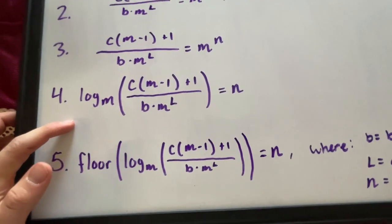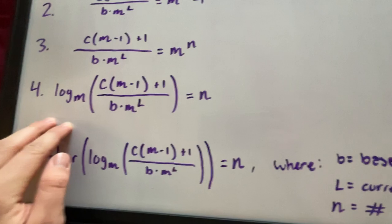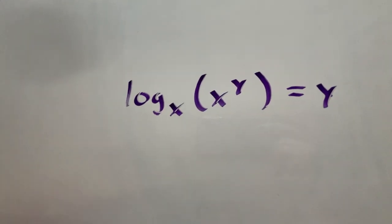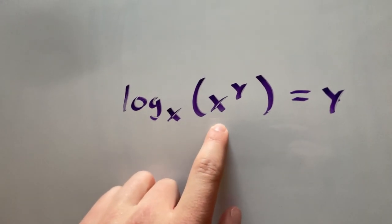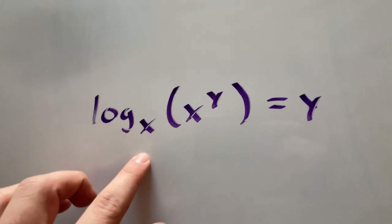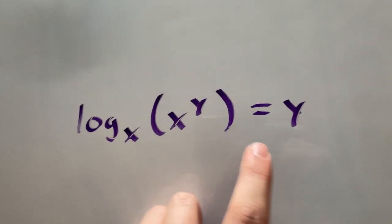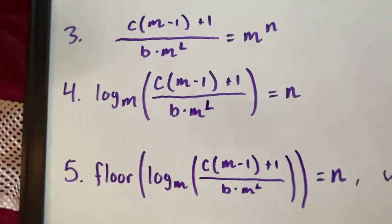And then we take the log base m to get rid of this exponent. This is a basic log rule where if we take any log with the base x, we can get rid of this x right here. Log base x of x to the power of y is just going to equal y. So then we have our n.